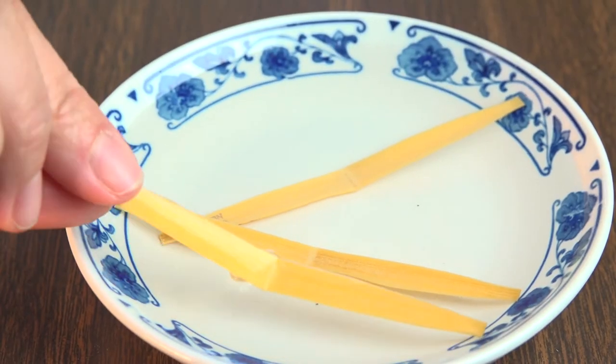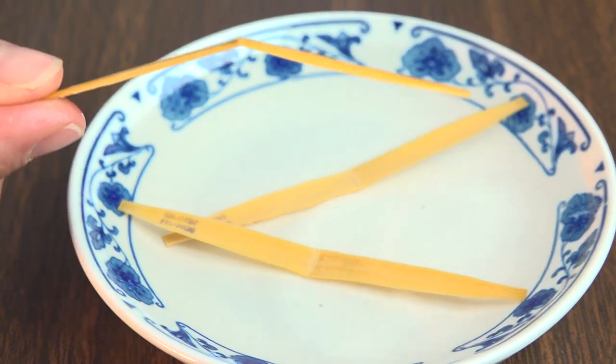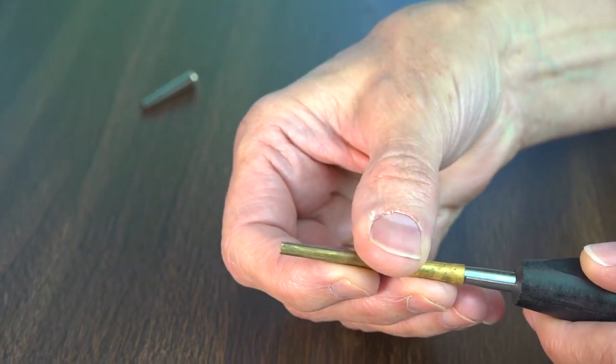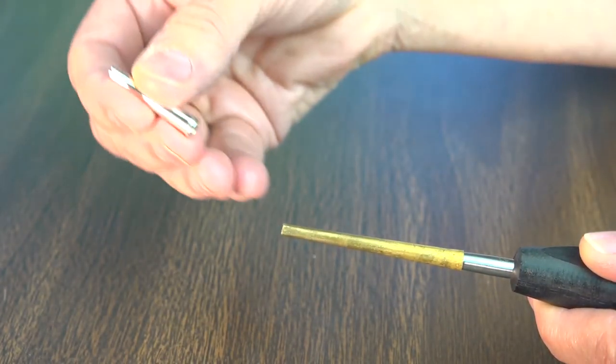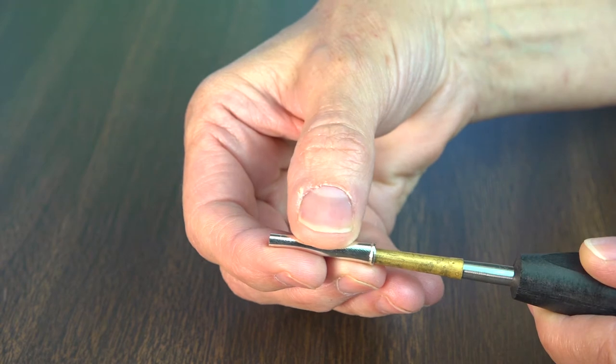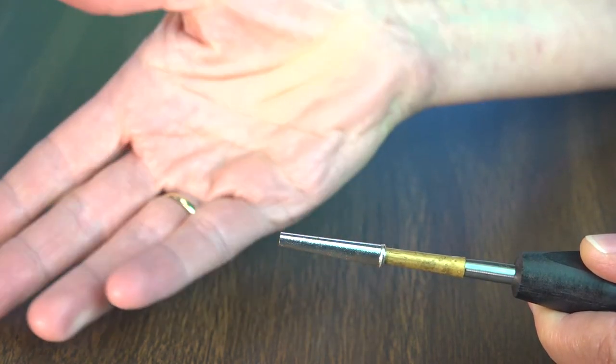Soak the cane for 40 to 50 minutes. If you don't own an English horn mandrel, you can fashion a makeshift one by taking the cork off of an oboe staple and putting that onto your oboe mandrel, then putting the English horn staple on that.